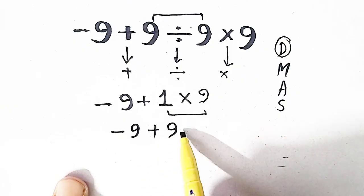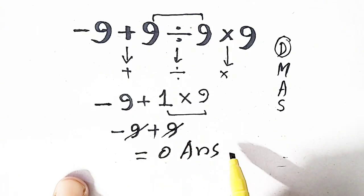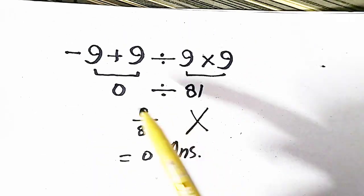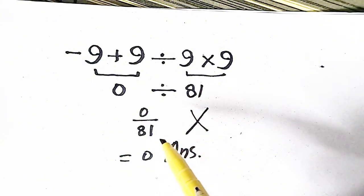So minus 9 plus 9, our answer will be equal to 0. But this method was incorrect because we have not followed the order of operation.